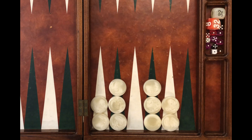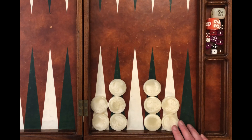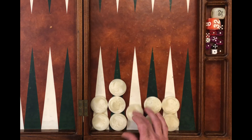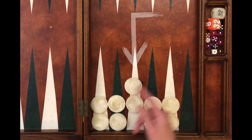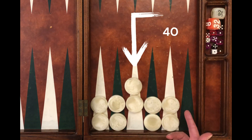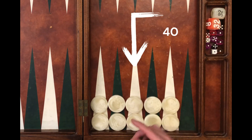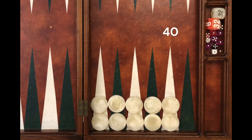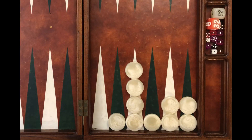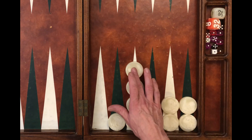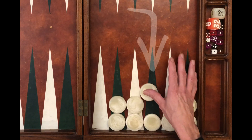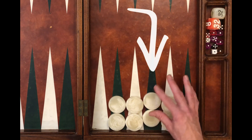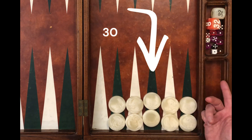So our first shifting example: these are the checkers we'd like to count. We can add 1, subtract 1, and we get a very simple formation that we already know — 40. Our next example of shifting: here we have a count that doesn't really look like anything we know. But if we add 1, subtract 1, it simplifies. Pip count is 30. No need to count anything here.